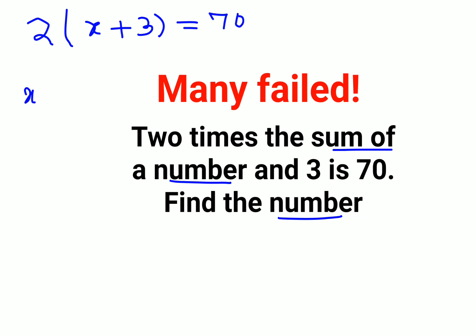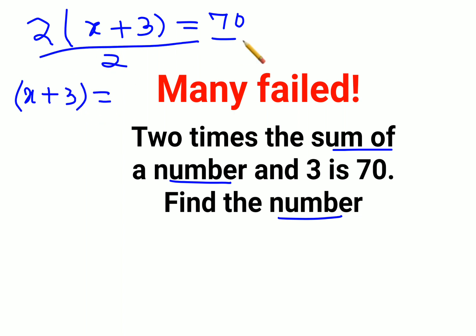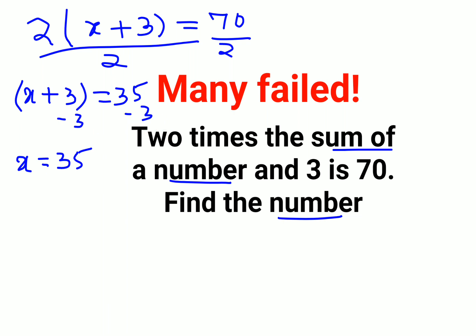So we have x plus 3. In order to find the value of x, we will divide both sides by 2. 70 divided by 2 is 35. So the value of x comes out to be 35. We will subtract 3 on both sides. So 35 minus 3 — x equals to 32.